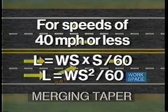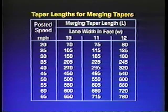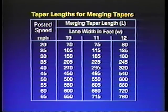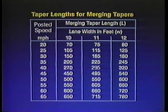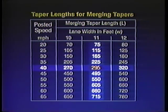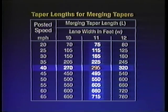In most tables, the equation is shown like this. Most state and local manuals include tables showing the required taper lengths for various speeds and lane widths. For example, a 40 mile per hour posted speed and an 11 foot lane requires a 295 foot merging taper.